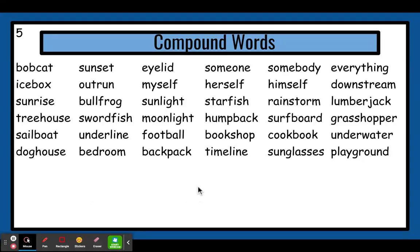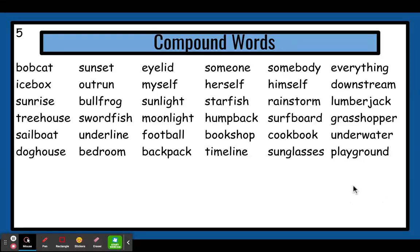Next word — we have the first part: time, and second part: line. Put them together: timeline. That is a line, kind of like a number line, that keeps track of what has happened at different times in history. Next word — first part: sun, second part: glasses. Put them together: sunglasses. Those are glasses that you wear in the sun to protect your eyes. Last word — we have play and ground. Put them together: playground. That is the grounds where you can play, with play equipment.